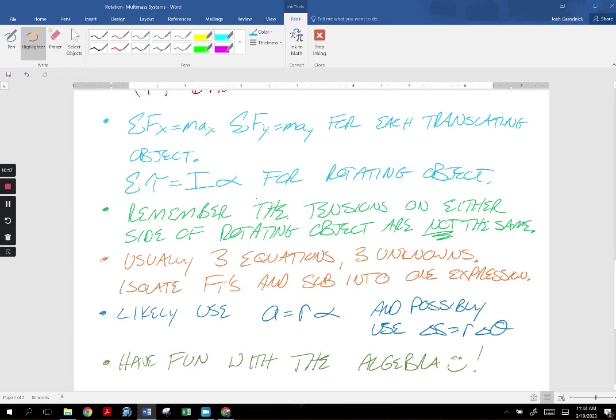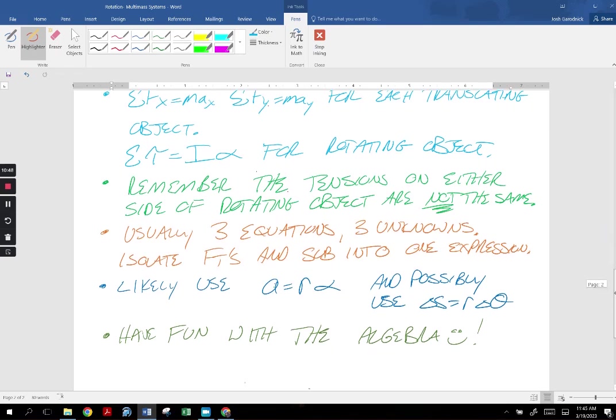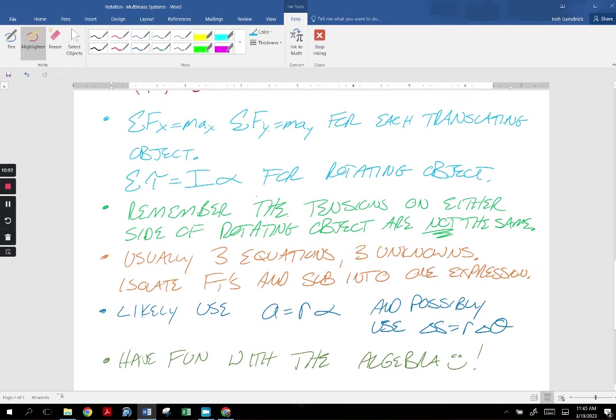There's usually three equations, three unknowns. Your goal is to isolate the FT's, and I would suggest subbing them into the sum of the torques. And at some point, you are likely to use your friend ralpha. You may be asked to use romega. And who knows, you might be asked, if this thing rotates this many times, so you may be stuck with delta S equals ratheta. And then you can do some algebra. I hope this video is helpful. The pen was driving me nuts today. So I'm going to lower my standards, give myself roughly three out of five stars on this one, and I still wouldn't change a thing.